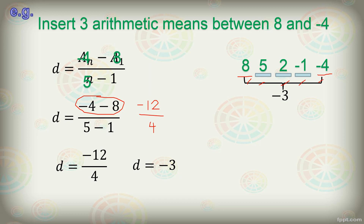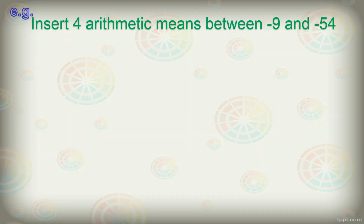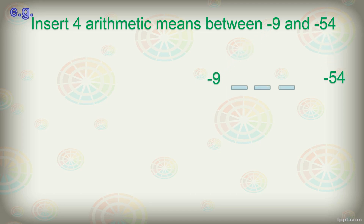Let's have another one: Insert four arithmetic means between negative 9 and negative 54. We visualize the problem, so our sequence is: negative 9, blank, blank, blank, blank, blank, negative 54. Whenever we are asked for more than one arithmetic mean, we need to first find the common difference: D equals a sub n minus a sub 1 over n minus 1.